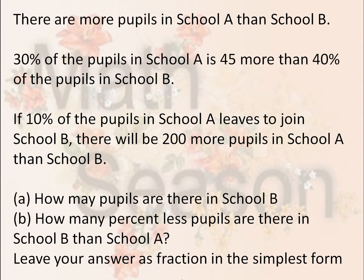There are more pupils in School A than School B. 30% of the pupils in School A is 45 more than 40% of the pupils in School B. If 10% of the pupils in School A leaves to join School B, there will be 200 more pupils in School A than School B.